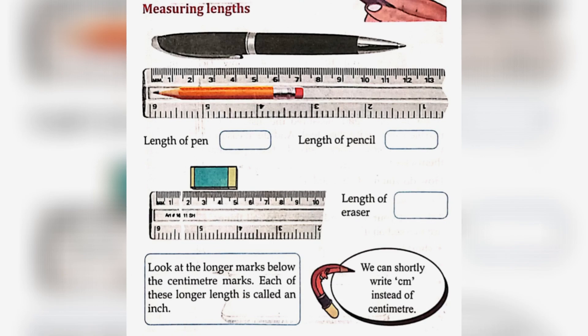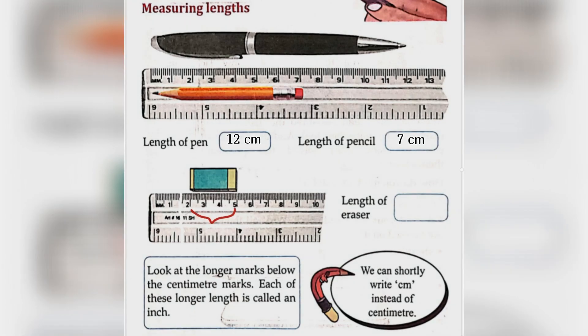Here we have to measure the pen, pencil, and eraser given in the picture. The length of the pen will be 12 centimeters. The length of the pencil is 7 centimeters. The length of the eraser will be 3 centimeters — that is, we count from 2 to 5 and we get the measurement 3 centimeters.